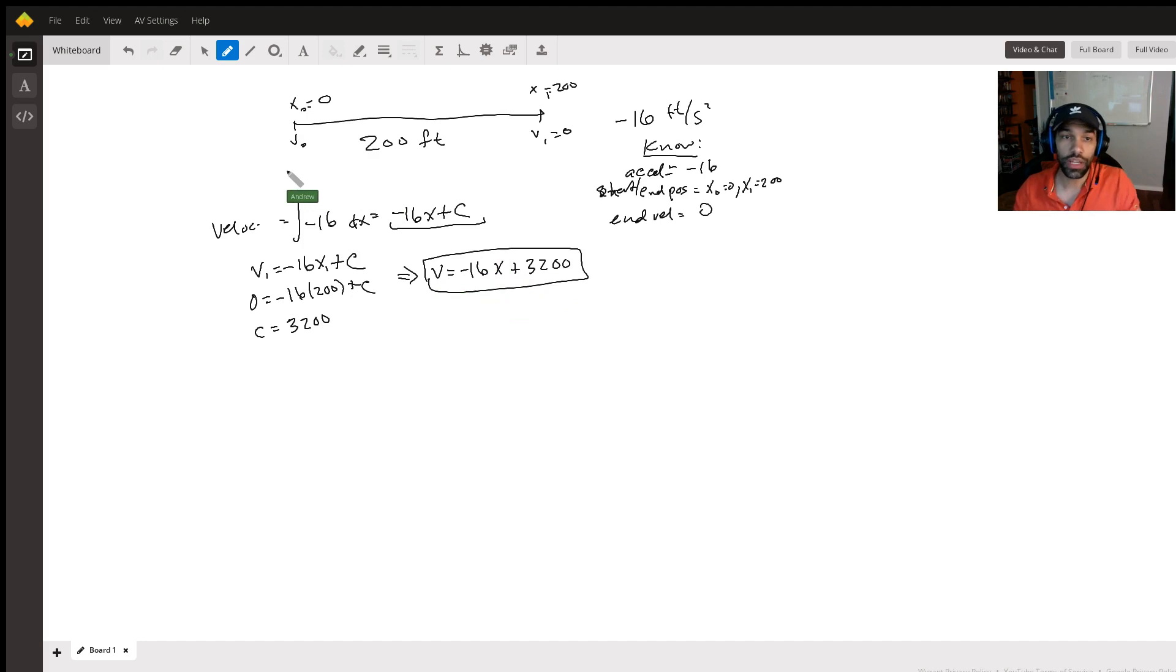So now all we need to do is plug in the appropriate values to get what that velocity was in the beginning. So our beginning velocity, our beginning position plus 3200. Now our beginning position here is 0. So if we plug that in, we get 0 plus 3200, which means that our beginning velocity is 3200 feet per second. That is our answer there.